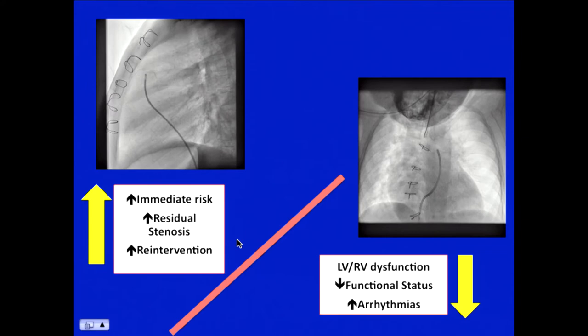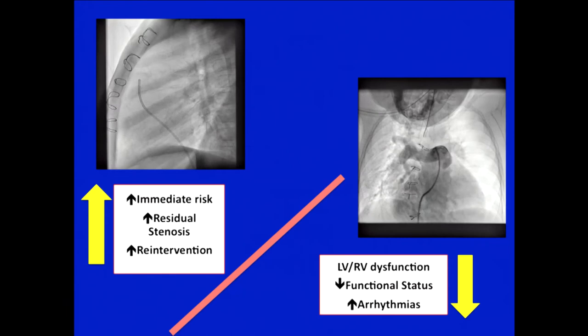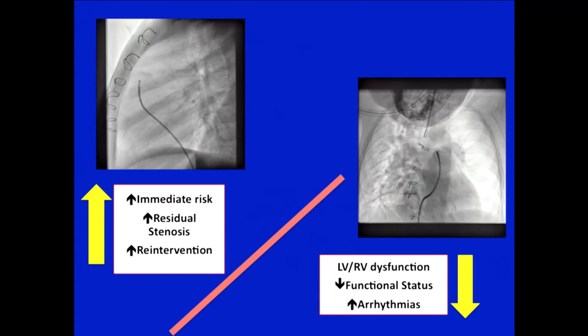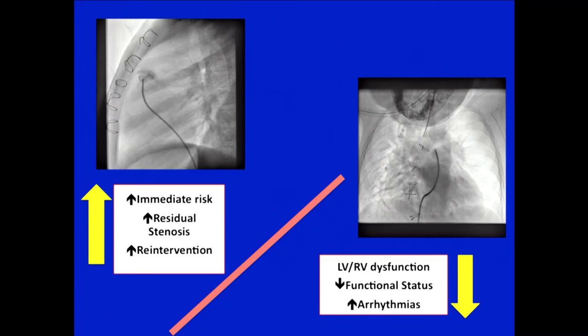When it comes to surgery for Tetralogy of Fallot, leaving patients who have a normal-sized annulus and those in whom you need to create a transannular patch, you're left with a dilemma of two problems. Do we leave a residual stenosis, which has its immediate risk and higher chances of re-intervention? Or do we leave a free pulmonary regurgitation, which causes long-term left and right ventricle dysfunction, reduction in functional status, and arrhythmias? Which one of the two is the lesser evil?